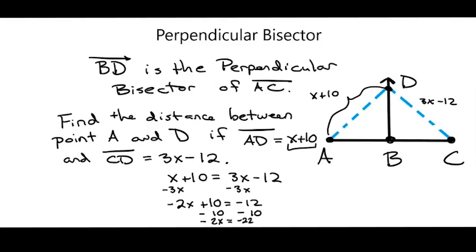Well, I will divide both sides by negative 2. So that will give me x equals negative 22 divided by negative 2. So x equals positive 11.